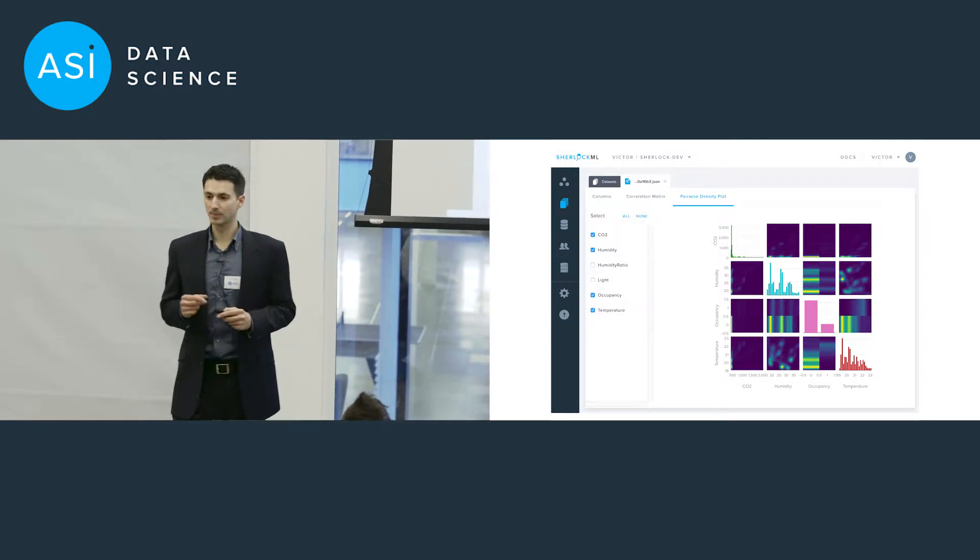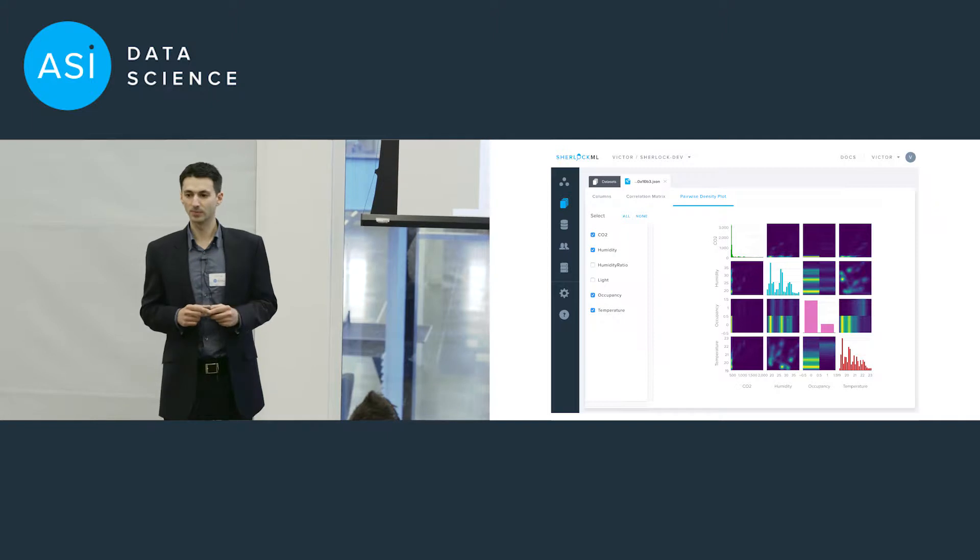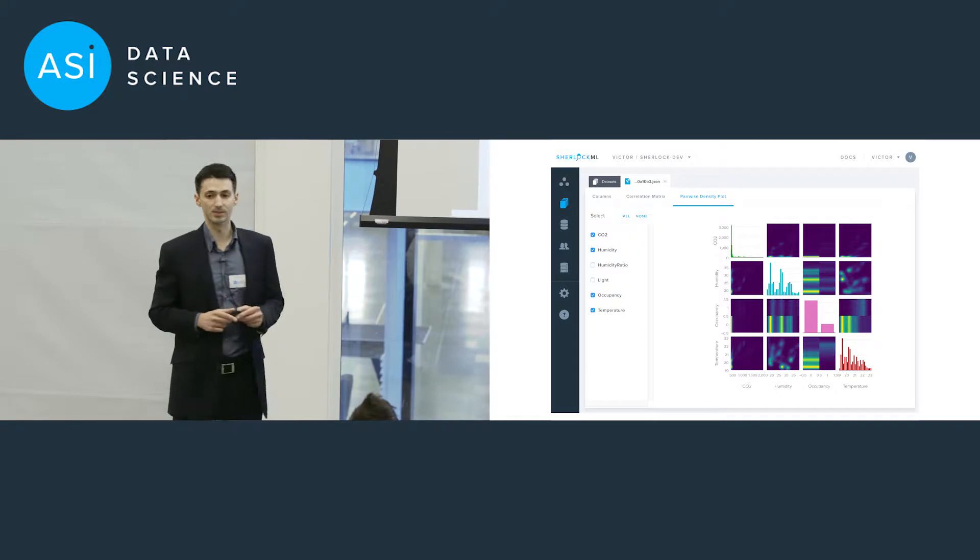The way Sherlock ML aims to help with this is by providing a component called lens, which aims to alleviate this. The idea is you read in your data set, you click a button, and it performs this initial data exploration for you, returning some summary statistics.